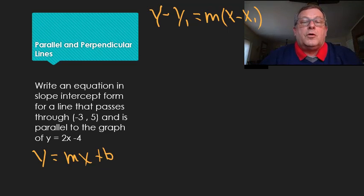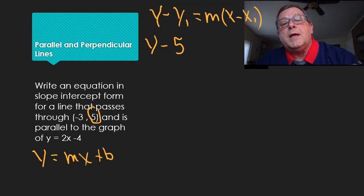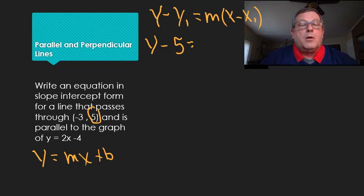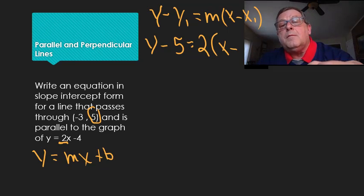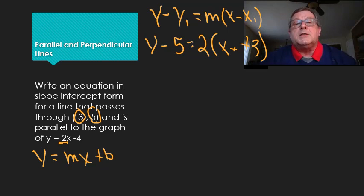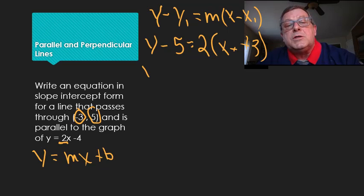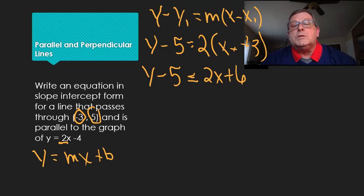I'm going to substitute in the information I'm given. I've got y minus 5 — since y1 is 5. The slope of the parallel line is 2, so I'll use m equals 2, and then x minus negative 3, which becomes x plus 3. Distributing the 2 to x plus 3 gives me 2x plus 6. So I've got y minus 5 equals 2x plus 6.